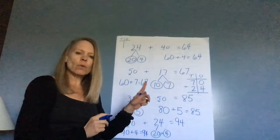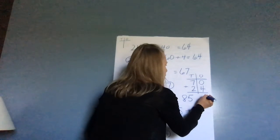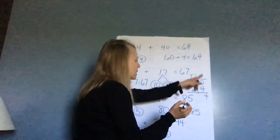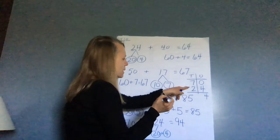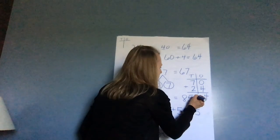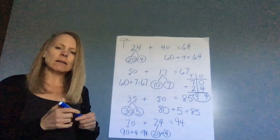When I write it like this, I start with the ones first. Zero plus four is four. Now I'm done with the ones place. Now I'm going to add the tens. Seven plus two tens is nine tens. So my answer is 94.